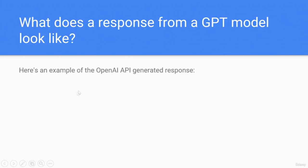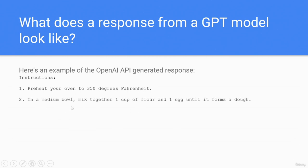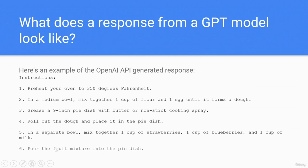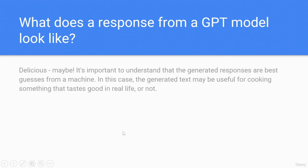Here is an example of the OpenAI API generated response — the instructions would be: preheat your oven to 350 degrees Fahrenheit; in a medium bowl, mix together one cup of flour and one egg until it forms a dough; grease a nine-inch pie dish with butter or non-stick cooking spray; roll out the dough and place it in the pie dish; in a separate bowl, mix together one cup of strawberries, one cup of blueberries, and one cup of milk; pour the fruit mixture into the pie dish and bake.